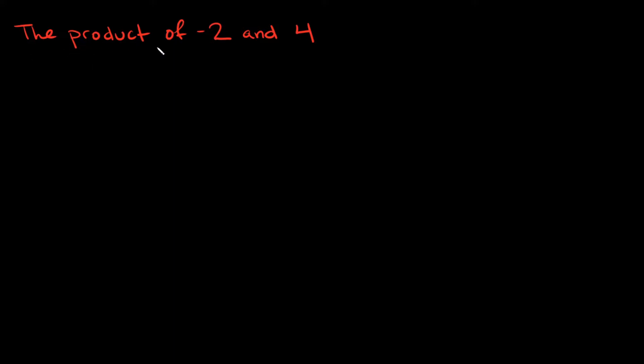So here I have the product of negative 2 and 4. The word product means multiply, so here I really have negative 2 times 4. So what is negative 2 times 4? Well, 2 times 4 is 8, right? And then a negative number times a positive number is a negative number, so negative 8 would be your answer.